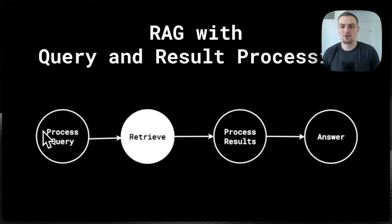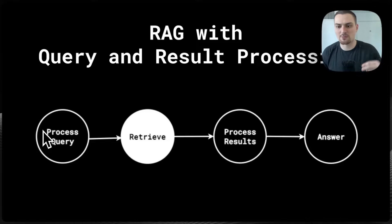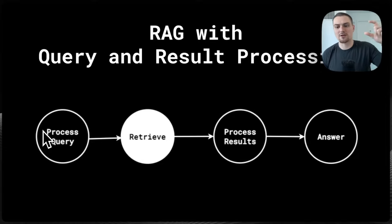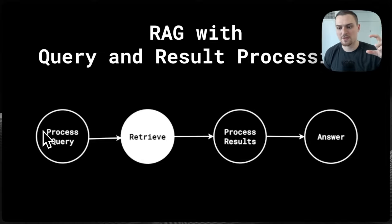Next up we have query and result processing. You take the query and pass it into a prompt with something like 'your task is to take a query as well as context and reformulate it into a better question.' Now you have a prompt in the process query, with input-output examples of what it means to take a question in context and formulate a new query.